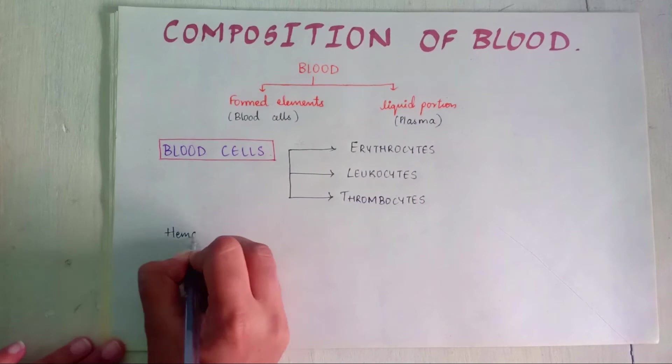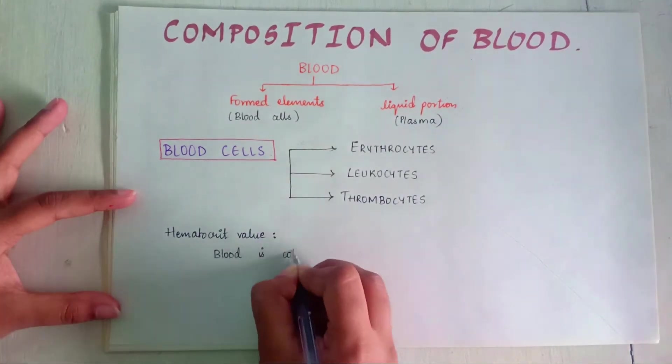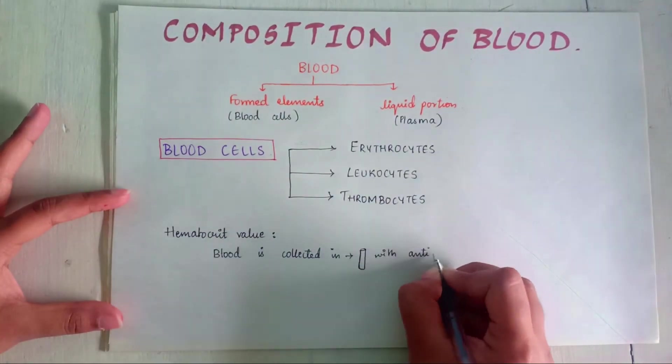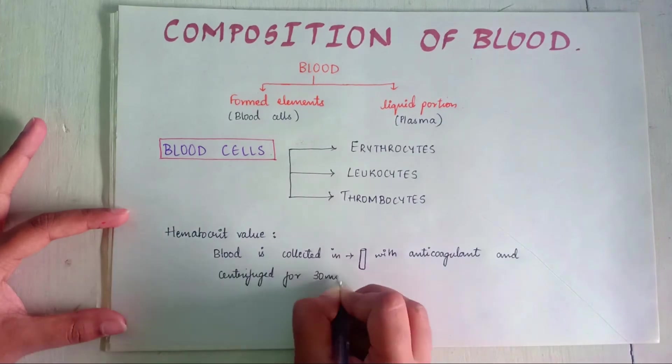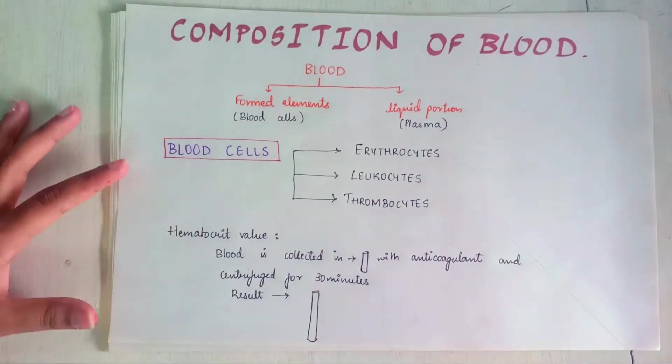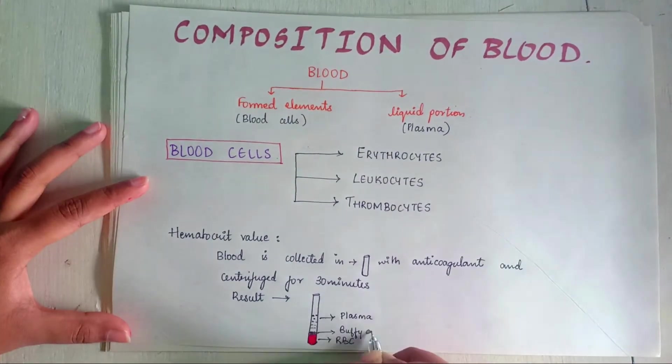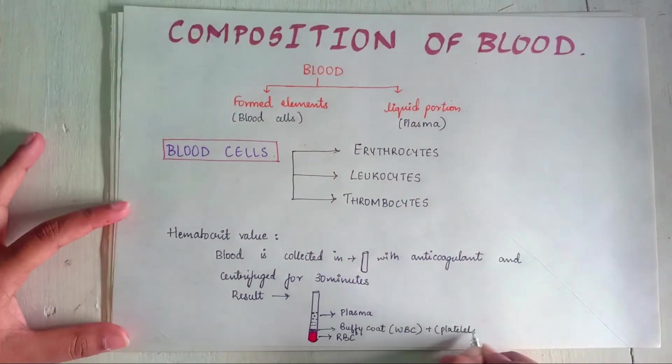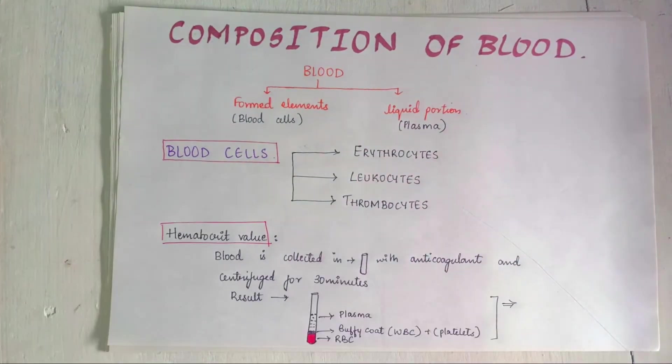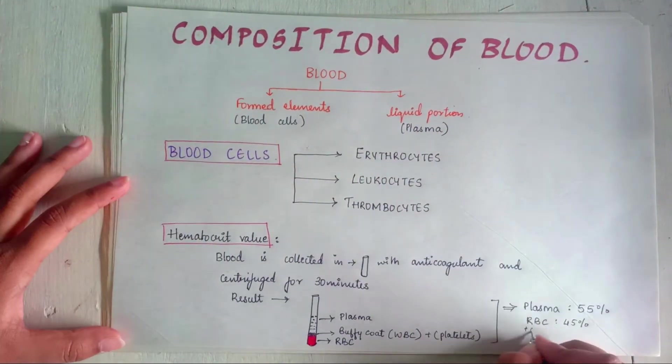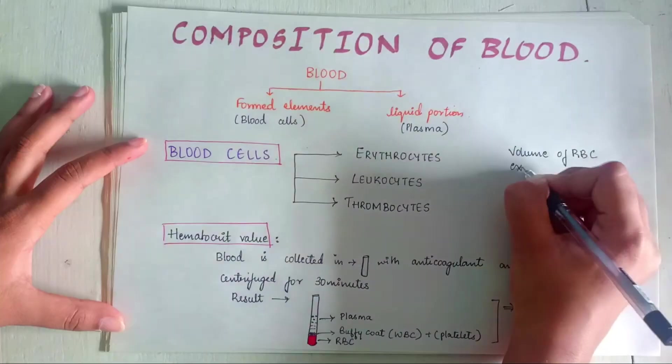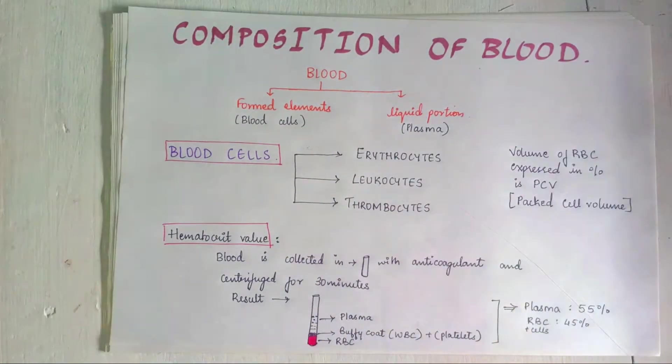To know the percentage of composition, blood is collected in a hematocrit tube with suitable anticoagulant and centrifuged for 30 minutes at a speed of 3000 revolutions per minute. The red blood cells settle down at the bottom having a clear plasma at the top. The plasma forms 55 percent and the red blood cells form 45 percent. The volume of red blood cells expressed in percentage is called hematocrit value or packed cell volume.